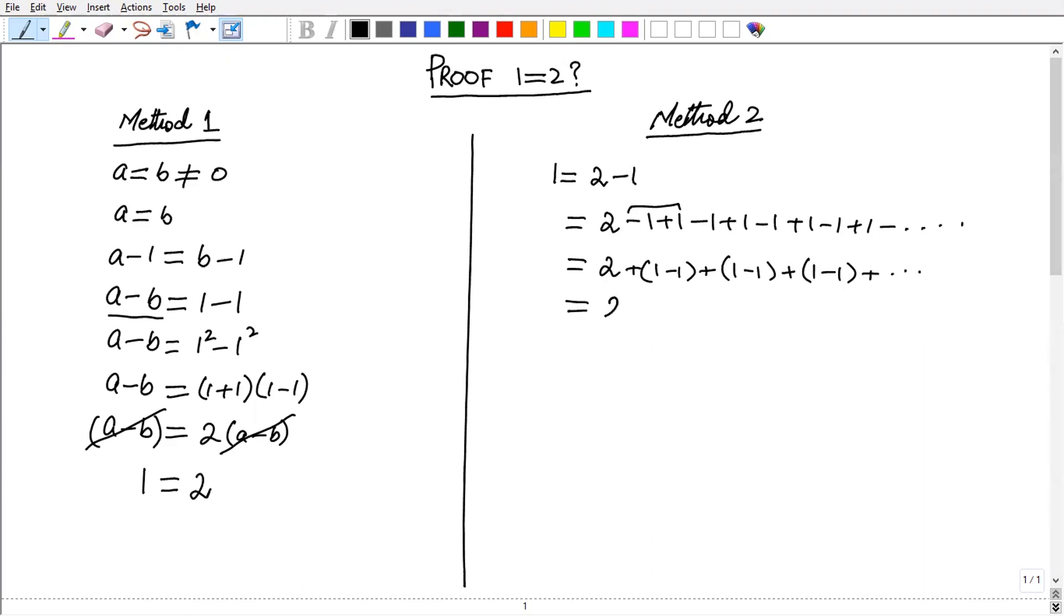We know that 1 minus 1 is 0. So we have 0 from here. Again, we have 0 from here. Again, we have 0 from here, and 0 till infinity.